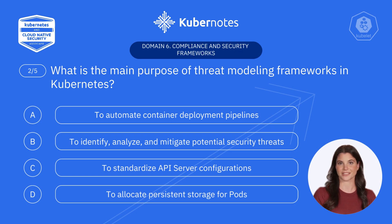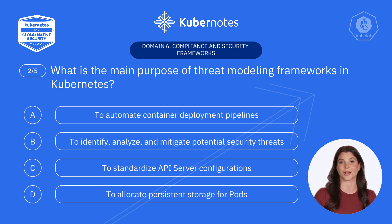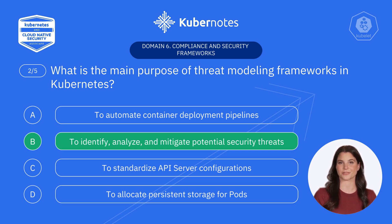Let's tackle question two. What is the main purpose of threat modeling frameworks in Kubernetes? A, to automate container deployment pipelines. B, to identify, analyze, and mitigate potential security threats. C, to standardize API server configurations. D, to allocate persistent storage for pods. You nailed it. It's B, to identify, analyze, and mitigate potential security threats. Threat modeling frameworks, such as Stride and ATTCK, help teams proactively identify vulnerabilities and design mitigation strategies to secure Kubernetes clusters.